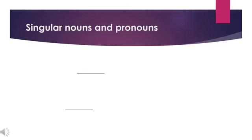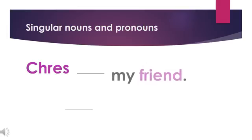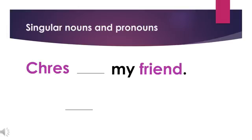For example: Cress, blank, my friend. Cress is a singular noun, so we need to use "is." Let's read it again: Cress is my friend.